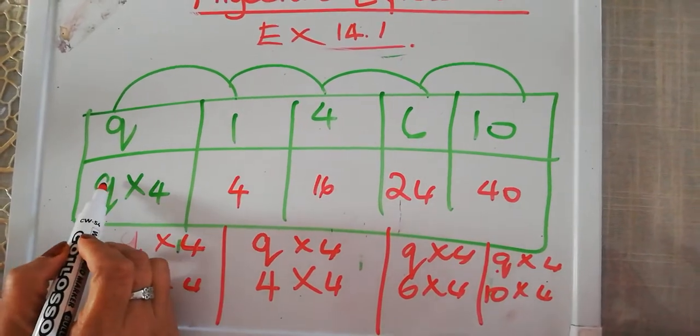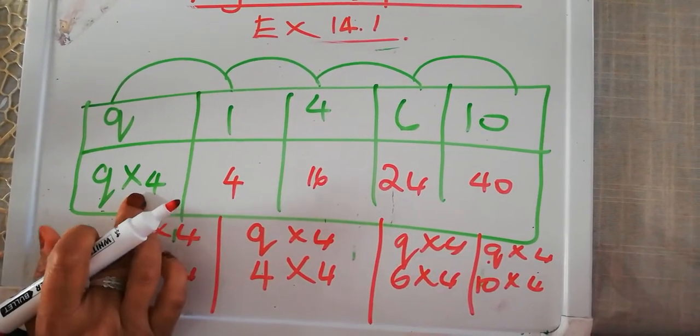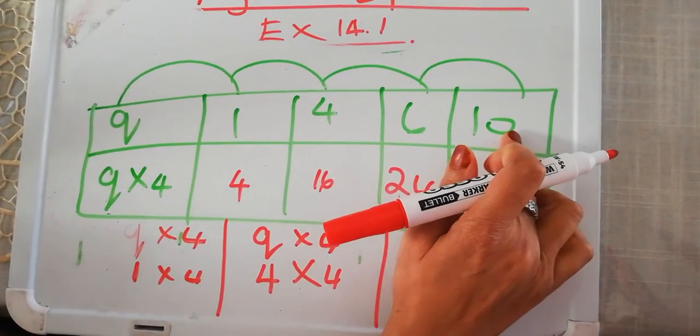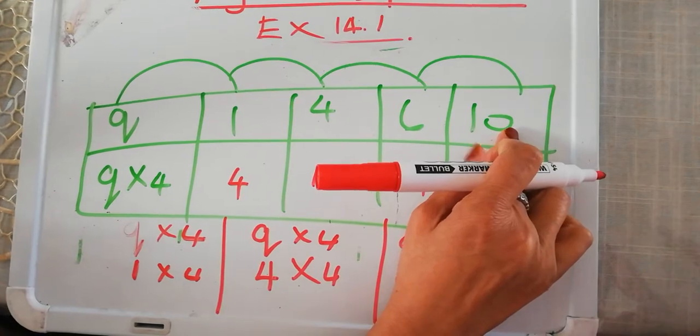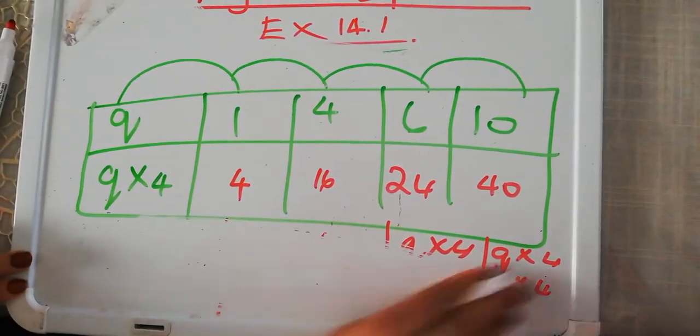So what am I doing? I'm only changing the value of Q. My times 4 is remaining the same. Where am I getting Q from? I'm getting Q from the top, where it's telling me the value of Q. This can apply. Obviously, you can use any rule for this.